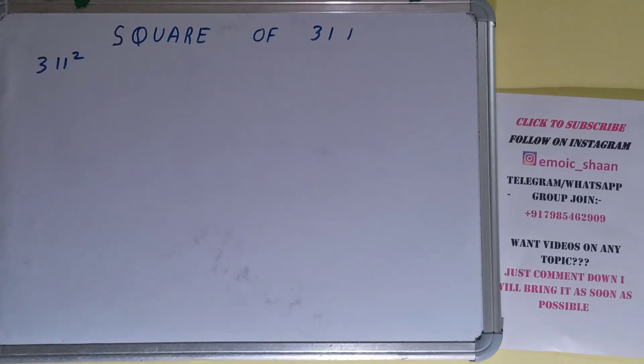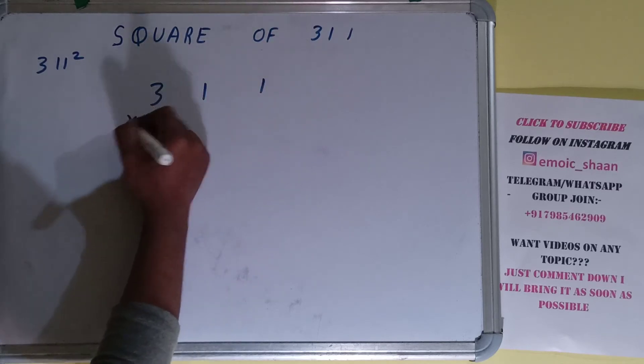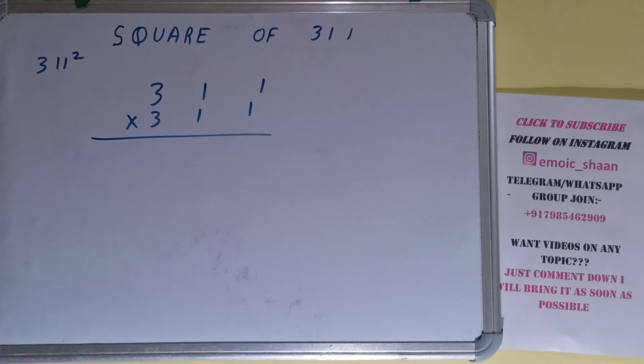Now coming on to the question, square basically means multiplying the number by itself. So the number over here is 311, so to find the square of it we need to multiply by itself, that is 311, and do the normal multiplication.